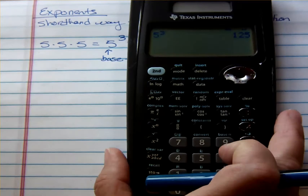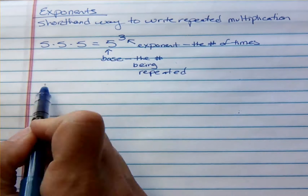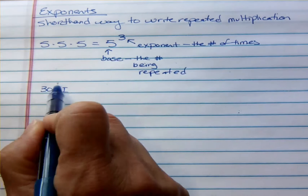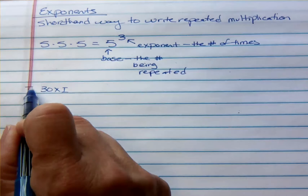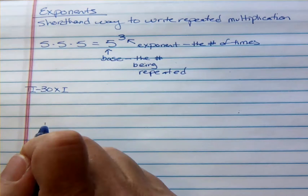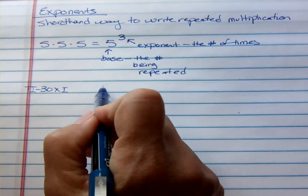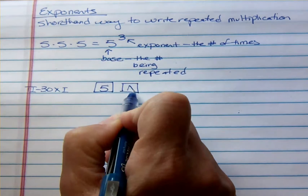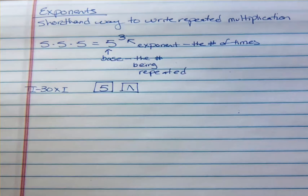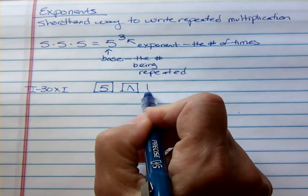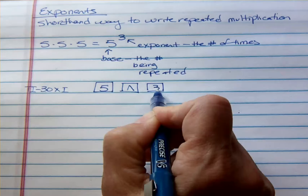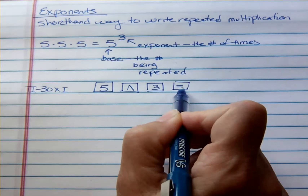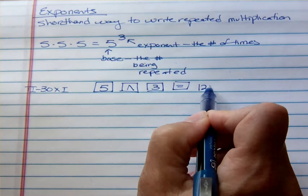That's how I would do it on this calculator. Other calculators, like the TI 30XI, those TI calculators are the easiest ones to use — those are the ones I recommend. You would put in your 5, and then the button that's got a caret, over to the left on the left side of your calculator, and then put in the 3. Then hit enter or equals, whichever button you have, and it'll tell you that's 125.